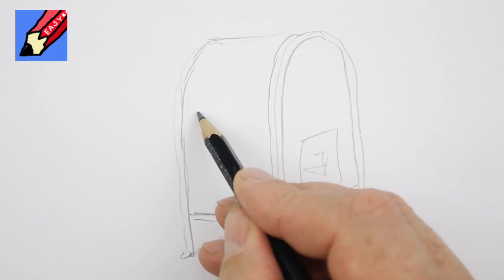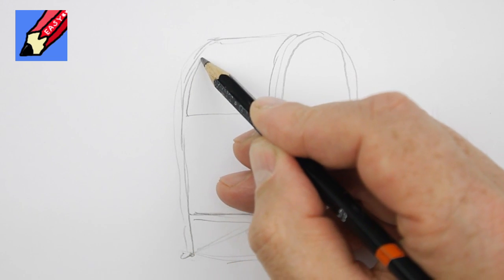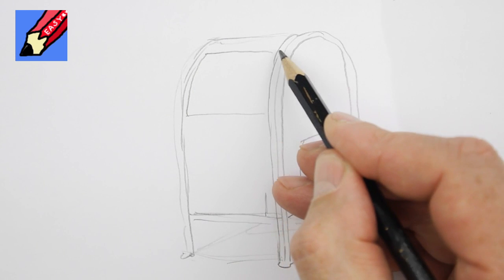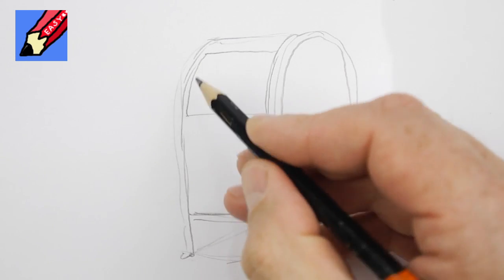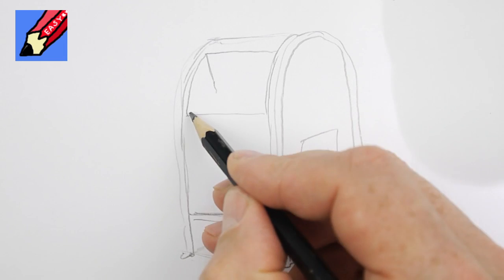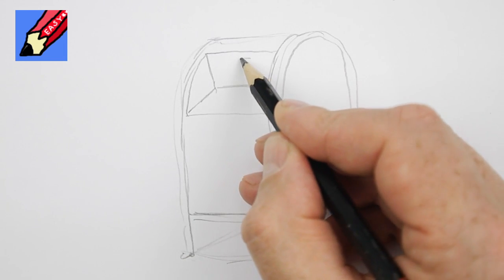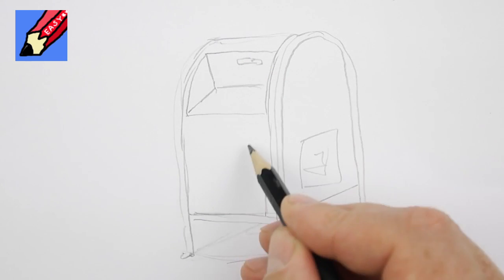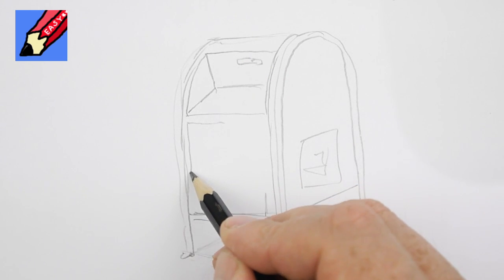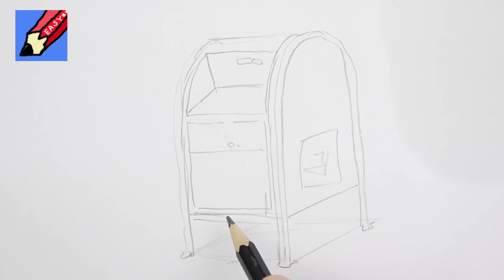And then we'll have US Mail on the side and we're going to want the opening like that. Now this is where I'm slightly making up because I'm not entirely sure how it works inside. I think you have a handle there and then you've got the opening bit where the mailman comes and gets it out. That's going to say US Mail.